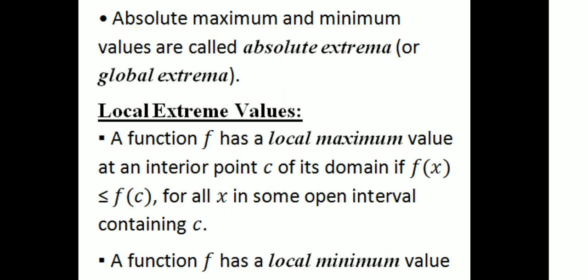Absolute maximum and absolute minimum values are called absolute extreme or global extreme. The absolute maximum and minimum are also referred to as absolute extreme and global extreme.